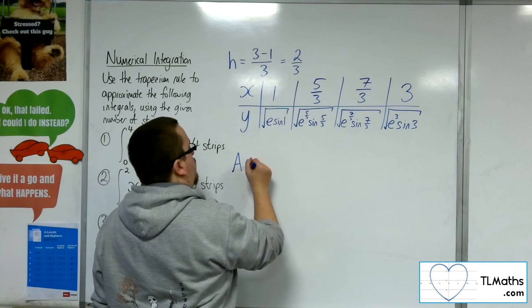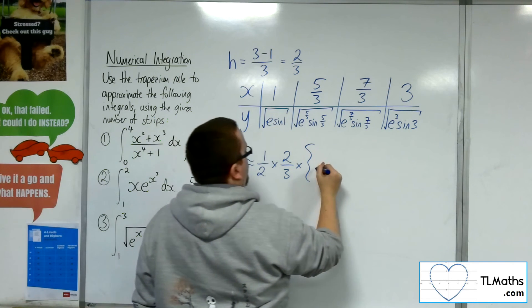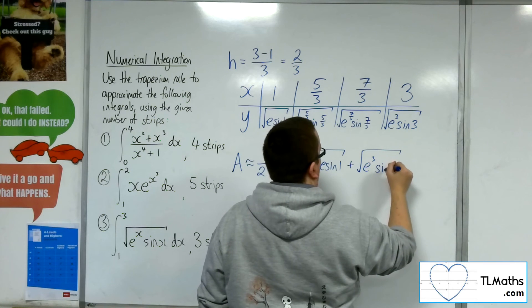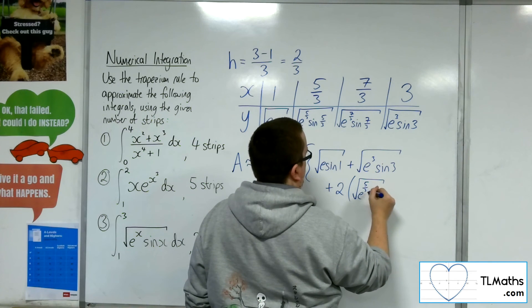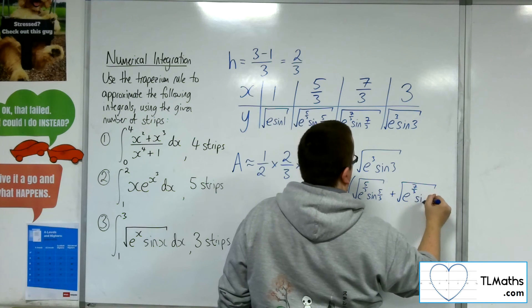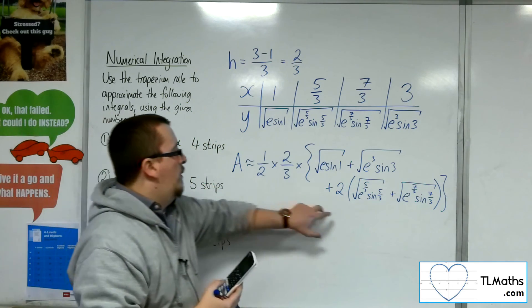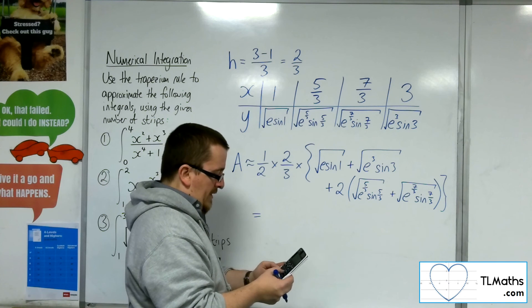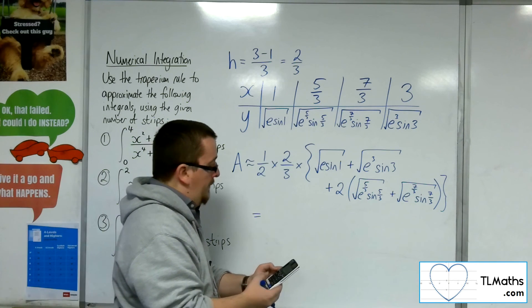So the area will be approximately 1 half times h times by the first plus the last plus 2 lots of the rest. So we've got the square root of e to the 5 thirds times sin 5 thirds. I've just noticed I'm in degrees. Quickly change that. So angle, unit, radians. Let's try that again.